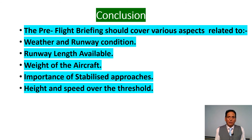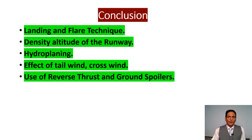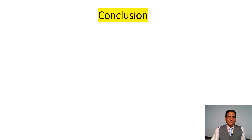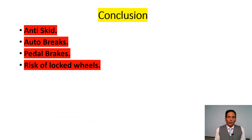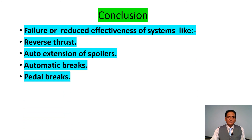The pre-flight briefing should also cover the importance of stabilized approaches, height and speed at the threshold, landing and flare technique, density altitude of the runway, hydroplaning, effect of tailwind and crosswind, use of reverse thrust and ground spoilers, autobrakes and pedal brakes, risk of locked wheels, and failure or reduced effectiveness of systems like reverse thrust, auto-extension of spoilers, automatic brakes, and pedal brakes.